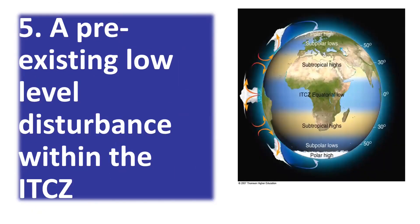Condition 5: there is a pre-existing low-level disturbance within the ITCZ. Cyclones often begin with small disturbances or clusters of thunderstorms. These disturbances may be triggered by various factors such as the ITCZ, the Intertropical Convergence Zone, or atmospheric waves.